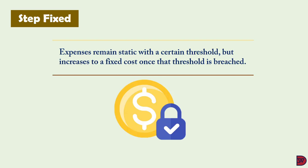For example, a factory warehouse with a monthly rent of $10,000 has the capacity to store 500,000 units of goods. If a business produces from zero up to 500,000 units, it will incur only $10,000 in rent. However, when it decides to increase production to 600,000 units and takes on a second warehouse of the same capacity, the total rent becomes $20,000, remaining fixed until production crosses one million units.